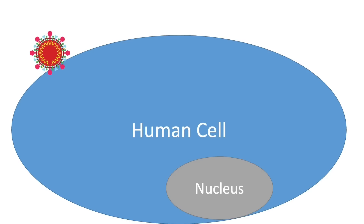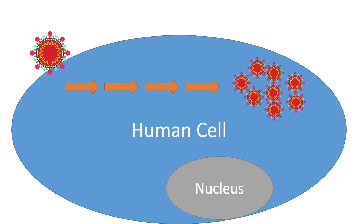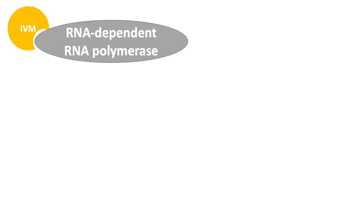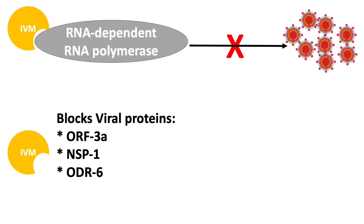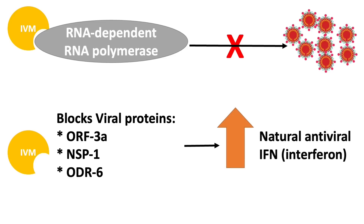Once the virus is inside the cell, its goal is to complete its viral cycle. The review also summarized findings on how ivermectin could bind to the RNA-dependent RNA polymerase and inhibit viral replication. Ivermectin also appeared to block viral proteins such as ORF3A, NSP1, and ORF6, and promote the release of natural antivirals or interferons within our cells.